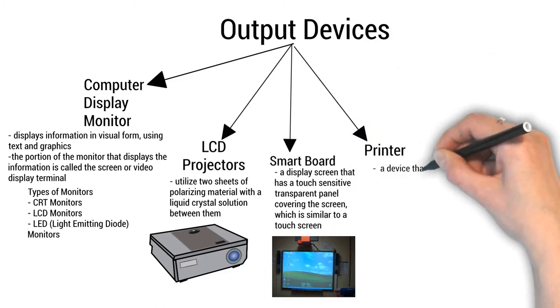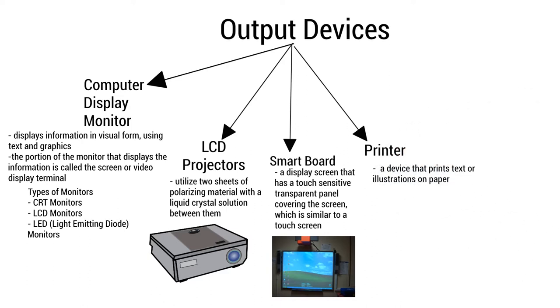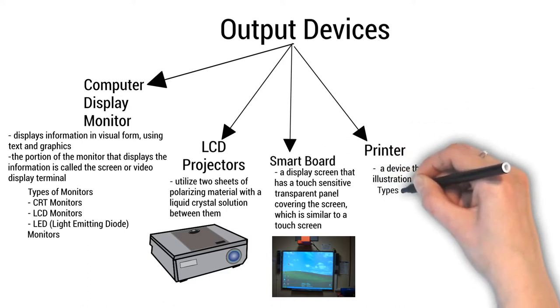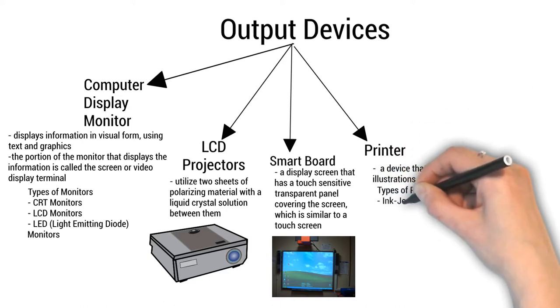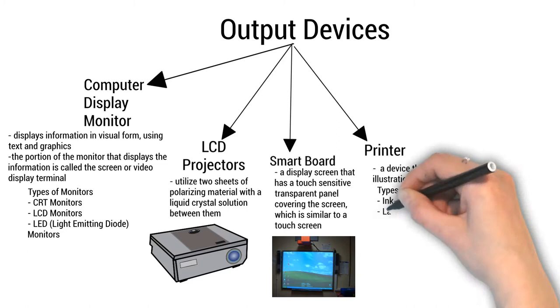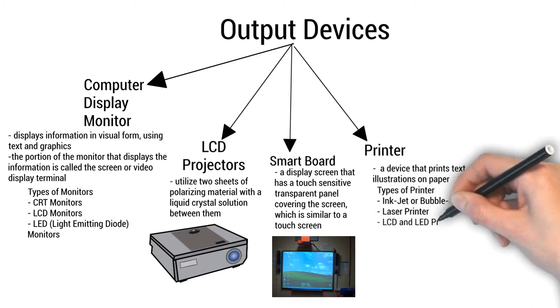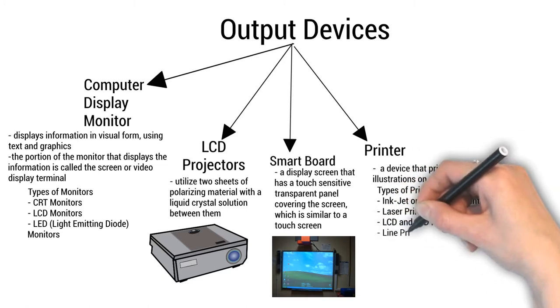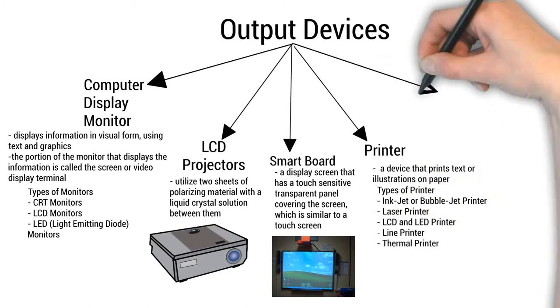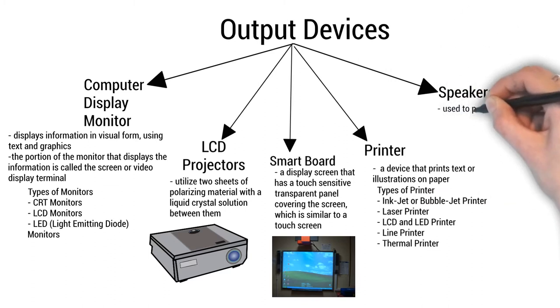A printer is a device that prints text or illustrations on paper. Types of printers include: Inkjet or Bubblejet printer, Laser printer, LCD and LED printer, Line printer, and Thermal printer.